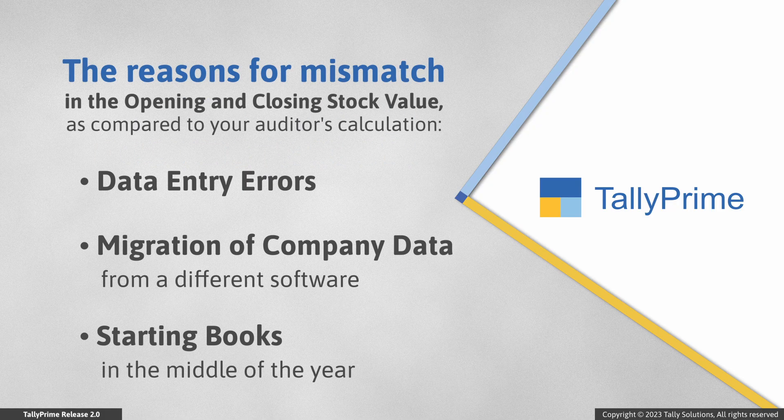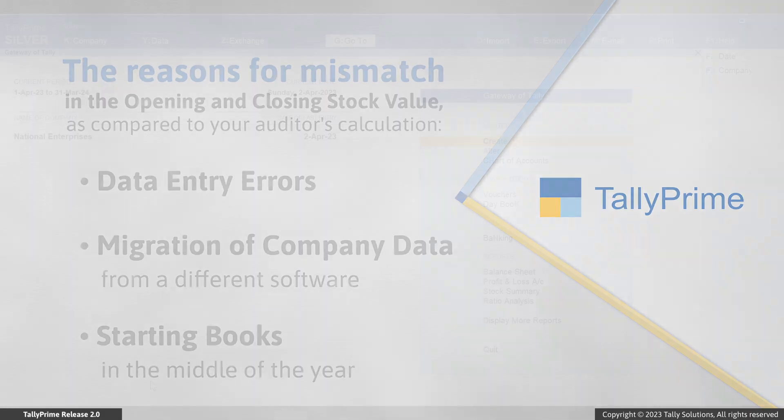However, there can be situations in which there is a mismatch in the opening and closing stock value compared to the values assessed by your auditor. This may happen in case of manual data entry errors. In a different scenario, you might have migrated your company data from a different software, or started books in the middle of the year, say January. In such cases you may want to specify the opening and closing stock value in Tally Prime.